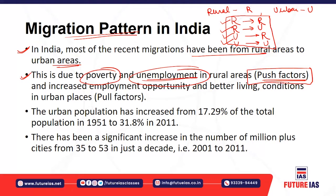Push factors like poverty and unemployment push people out of rural areas. They move to urban areas because of good employment opportunities, better living conditions, and better facilities — these are called pull factors. Pull factors attract or pull migrants from rural areas to urban areas.